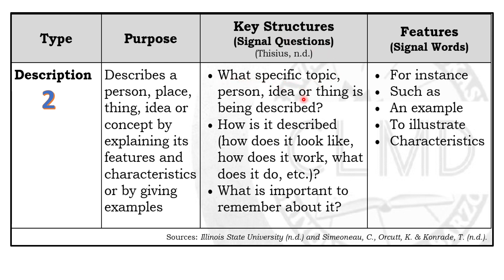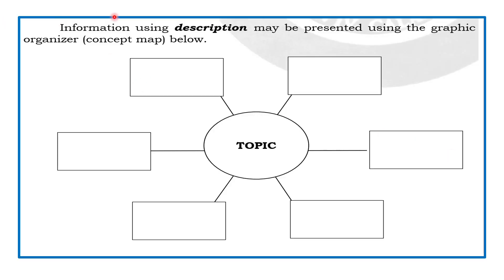The signal questions for description are: What specific topic, person, idea, or thing is being described? How is it described? How does it look? How does it work? What does it do? What is important to remember about it? Signal words include: for instance, for example, such as, an example, to illustrate, and characteristics. Information using description may be presented with a graphic organizer showing a main topic with supporting details.